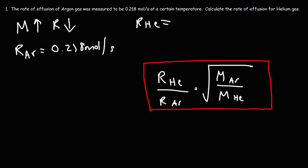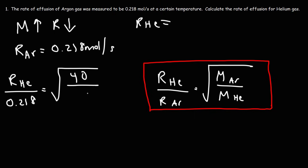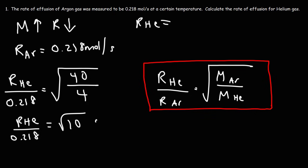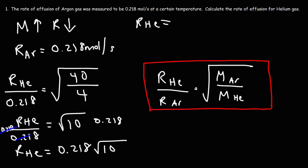Let's calculate the rate of effusion for helium gas. The rate for argon gas is 0.218. From the periodic table, the molar mass of argon is approximately 40 and the molar mass of helium is approximately 4. 40 divided by 4 is 10, so we have the square root of 10. To isolate the rate of effusion for helium, we multiply both sides by 0.218, giving us 0.218 times the square root of 10.